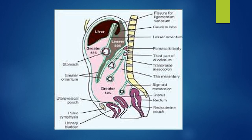Now I will trace this peritoneum in the sagittal section to make you understand how the peritoneum reflects. When it covers the under surface of the diaphragm it is parietal peritoneum; when it reflects onto the liver it forms a ligament. When it surrounds any organ it is called visceral peritoneum — here it surrounds the liver completely. Then at the fissure for ligamentum venosum it reflects as a double fold of peritoneum which is called lesser omentum.